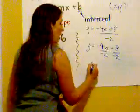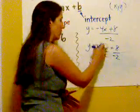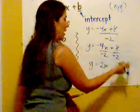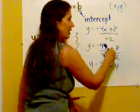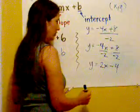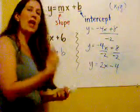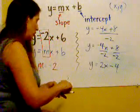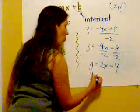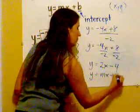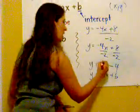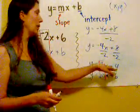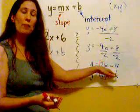So I get y is equal to negative divided by negative is positive 2x, positive divided by negative is negative 4, or you could have said plus negative 4. Once again, do we have it in a format that looks like the slope-intercept form? Yes, we do. So once again, if I write y equals mx plus b, I can see that my slope is 2, and my y-intercept is negative 4.